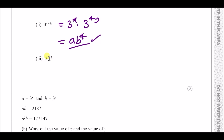For the last part, we partition again: 3 to the power y times 3 to the power minus 1. Well, 3 to the power y is just b, and 3 to the minus 1 is a third, so the answer is b over 3.